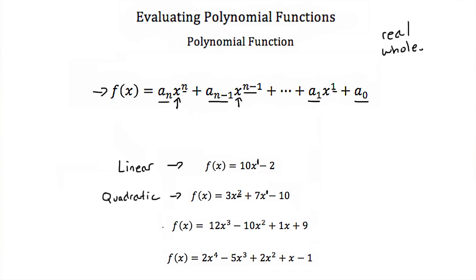Our next example is 12x³ − 10x² + 1x + 9. Our highest exponent is 3, so this is called a cubic function, or a cubic polynomial.